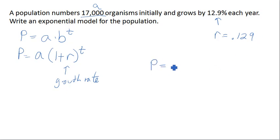So putting that all together, we can write our model. The population will be 17,000 times 1 plus 0.129 to the t power. Or, of course, we could go ahead and simplify this a little bit by adding these, giving us 17,000 times 1.129 to the t.